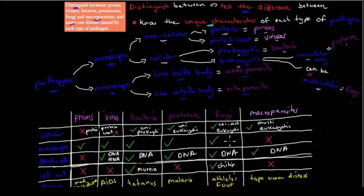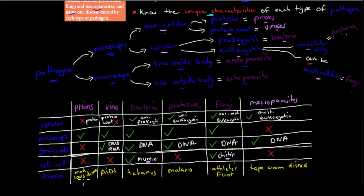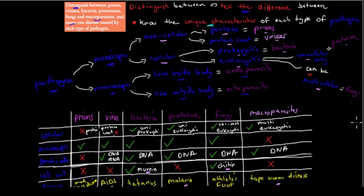All the first five pathogen types are microscopic, except macroparasites. For genetic information: prions have none (just protein); viruses can have DNA or RNA; all others just have DNA. Prions, viruses, protozoa, and macroparasites have no cell wall; bacteria have a cell wall made of murein; fungi have a cell wall made of chitin. Diseases: prions cause Mad Cow disease; viruses cause AIDS; bacteria cause tetanus; protozoa cause malaria; fungi cause athlete's foot; macroparasites — tapeworms cause tapeworm disease.